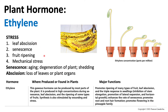Ethylene is a plant hormone and it can be produced during four different stresses that a plant may experience. The first stress a plant may experience is leaf abscission, which is defined as the loss of leaves or plant organs.